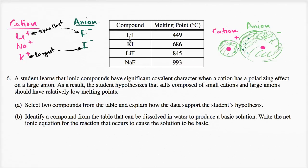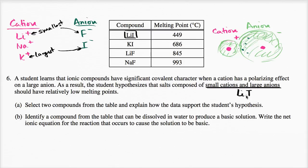Lithium iodide is a case of a small cation and a large anion — that's actually the best example of what the student is talking about: small cation and large anion. And as we can see, lithium iodide has the lowest melting point of everyone on the table.